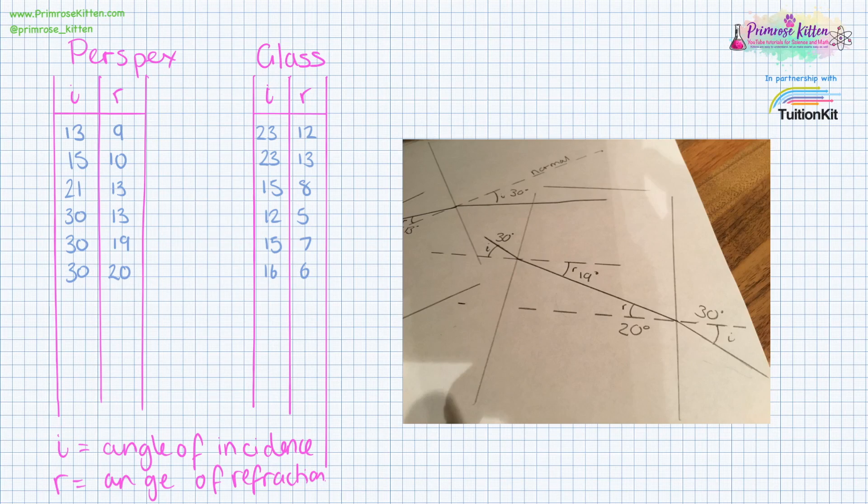These are the results from my experiment, and you can see they are not perfect. Here we have angle of incidence 30 with 13, 19, and 20 as the angle of refraction. This is okay. It was a real experiment. Real life is not perfect. We'll be able to see the relationship better when we plot it on a graph.